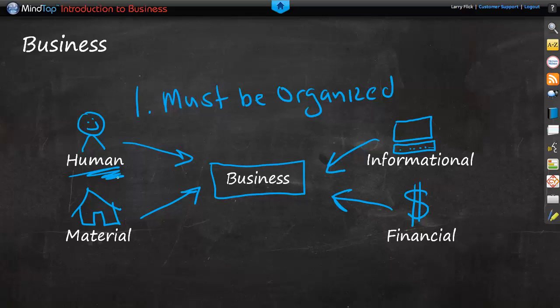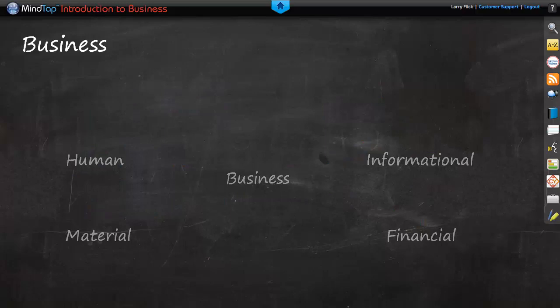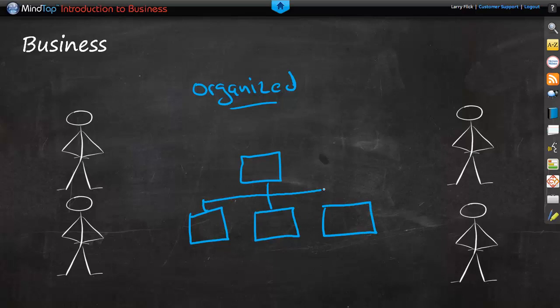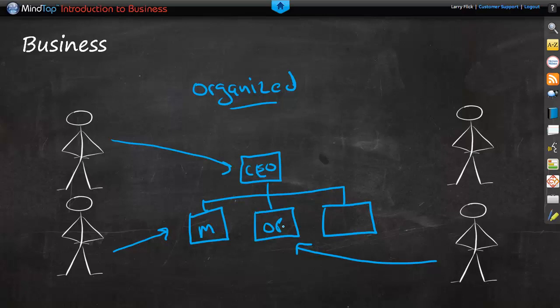Probably the most important resource a business has are its human resources. Generally, human resources are organized by using an organization chart. This person might become the CEO of the organization, this person the vice president of marketing, this person the vice president of operations, and this person the vice president of finance. Each performs a different function based on the knowledge, skills, and abilities they bring to the job, and there is a defined chain of command. So a business must be organized.